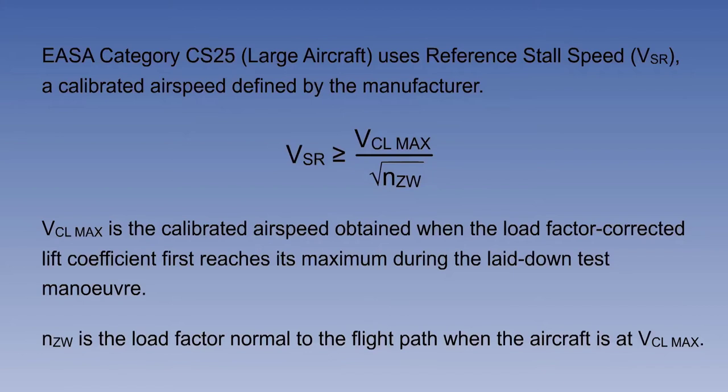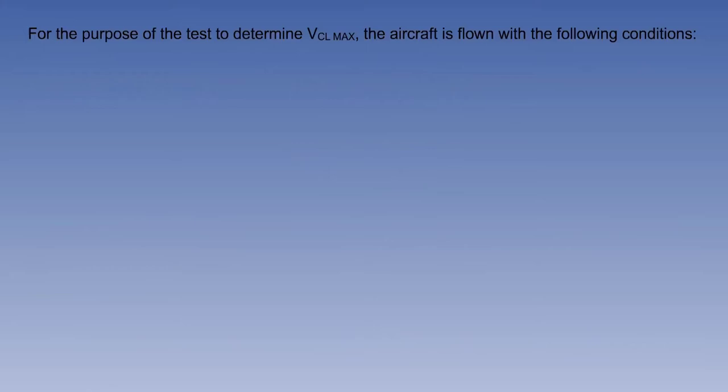For an aircraft without a stick pusher, the speed at which it reaches its CL max at 1G — in other words its 1G stalling speed — can be considered to be its VSR. For the purpose of the test to determine VCL max, the aircraft is flown with the following conditions.